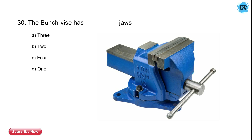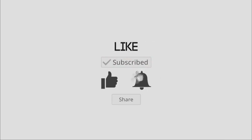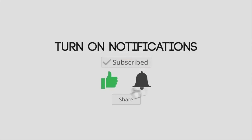The last question is: the bench vise has how many jaws? The options are three, two, four, and one. The correct answer is two — a bench vise has two jaws.